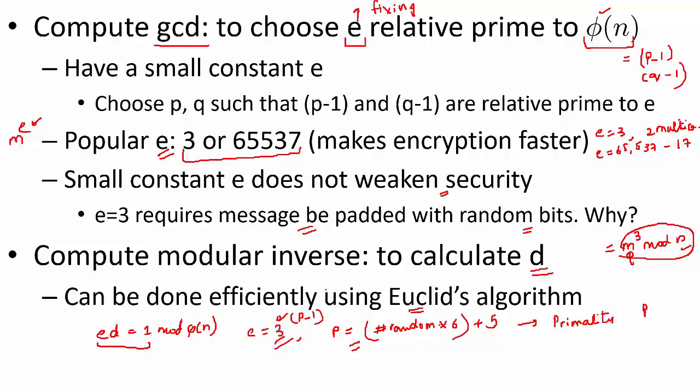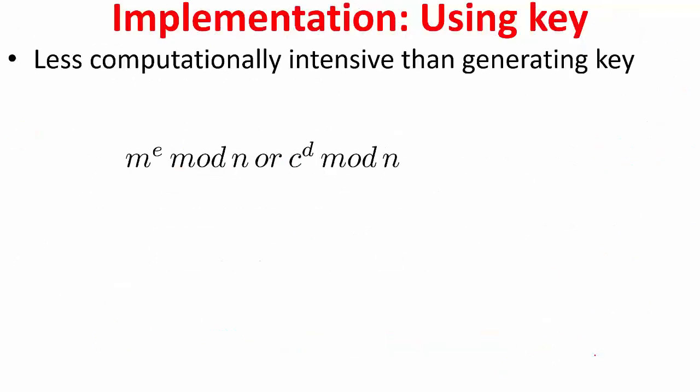So far we have seen how to generate the keys. How do you fix e? You can calculate d using this Euclid's algorithm. We also determine how to calculate n with this p into q, where this relation between e and the totient function is maintained. This is all with respect to generating keys.